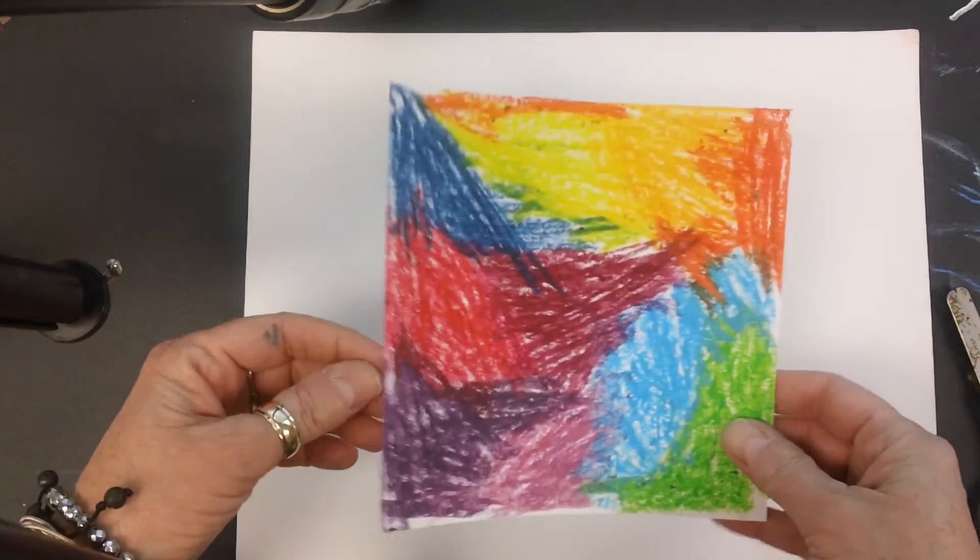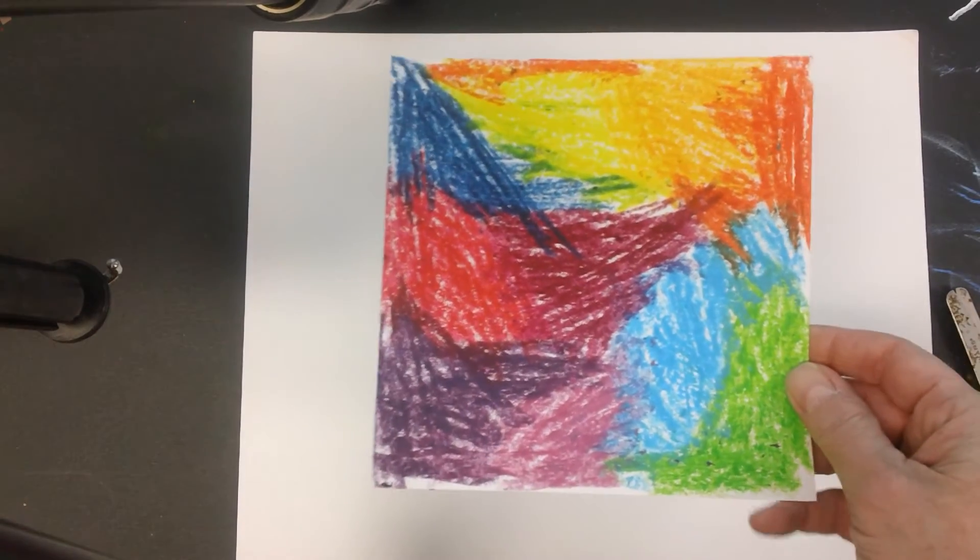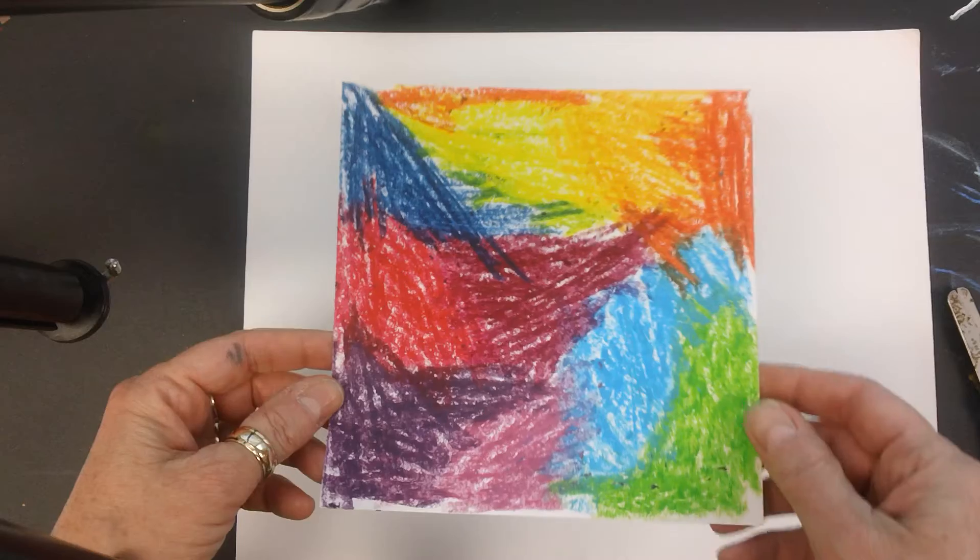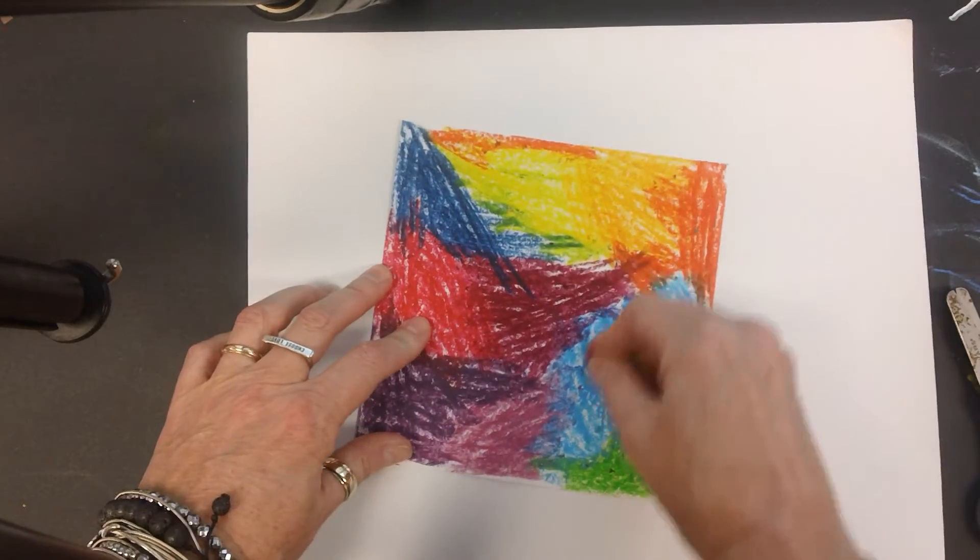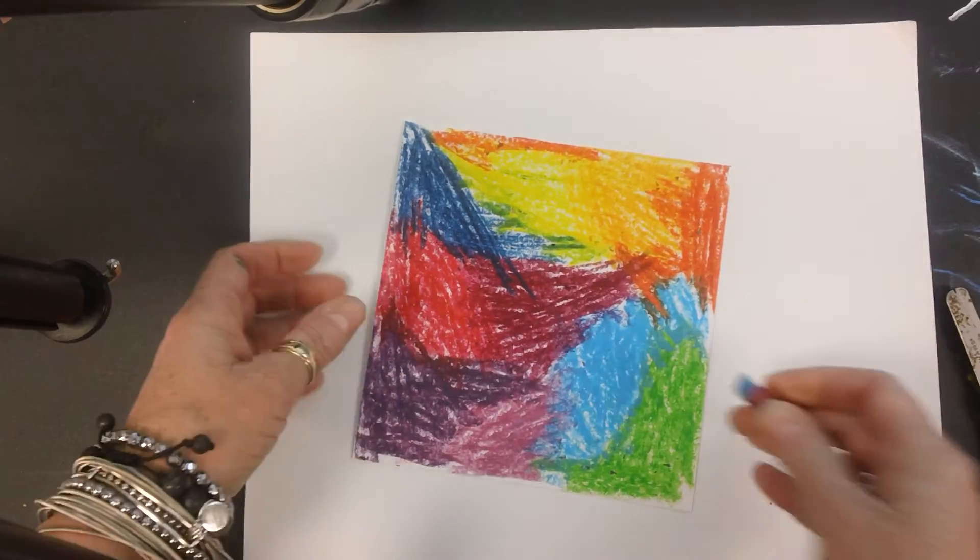You've colored in your six by six square with either crayon or oil pastel, and you've tried to cover or color it hard enough or completely enough where there is very little to no white paper showing.